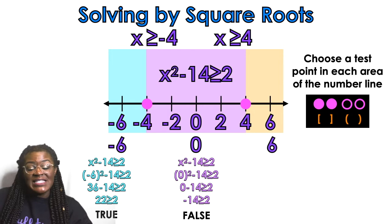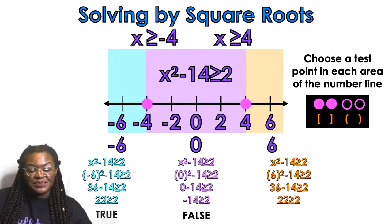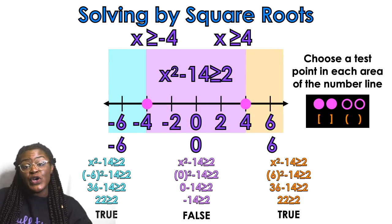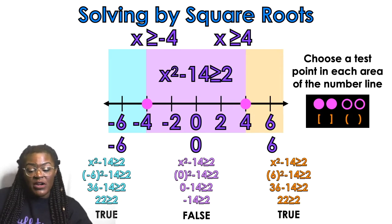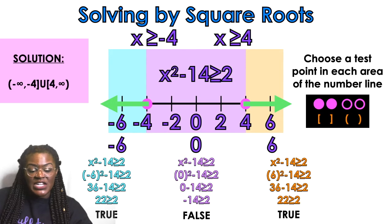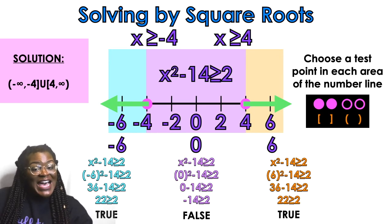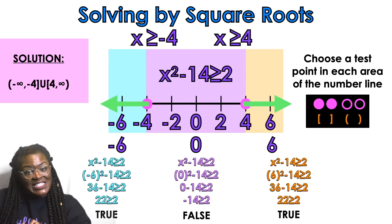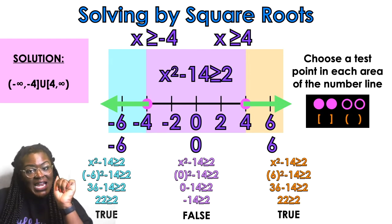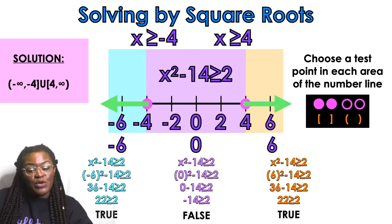For the orange area, I'm going to plug in 6, and this is true! So the orange area is going to be part of my solution. I'm in the blue area and the orange area because they were true when I plugged in a point. So my solution in interval notation looks like negative infinity to negative 4, bracket — bracket because there's an equal to in the inequality symbol — union with bracket 4, comma, positive infinity, closed parentheses. See how that works? That is example number one.